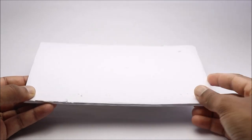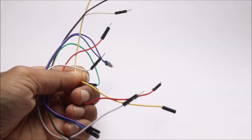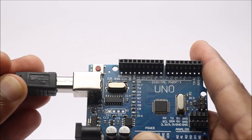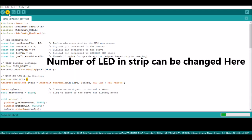...a RGB strip and few jumper cables. To begin with, I will upload this program to Uno. You can find this in the description box below.